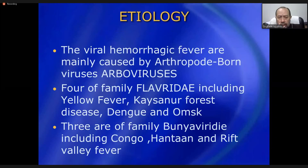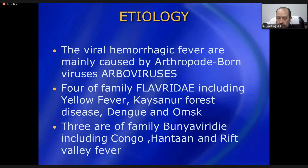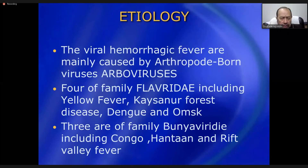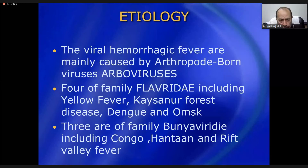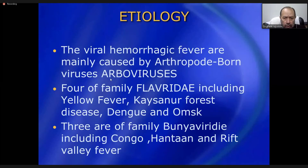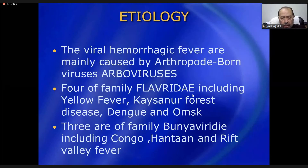There are many types of viral hemorrhagic fevers, but six or seven types are more common and important in different countries of the world. Most of these hemorrhagic fevers are mainly caused by arthropod-borne viruses, called arboviruses. Four from the family Flaviridae include yellow fever, Kyasanur Forest disease, dengue, and Omsk hemorrhagic fever.